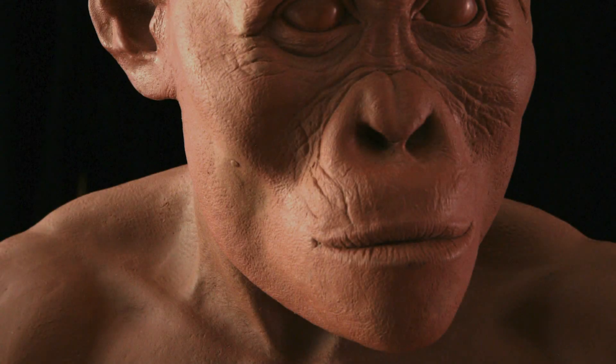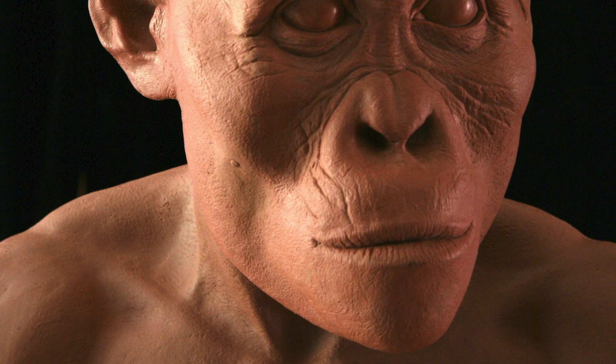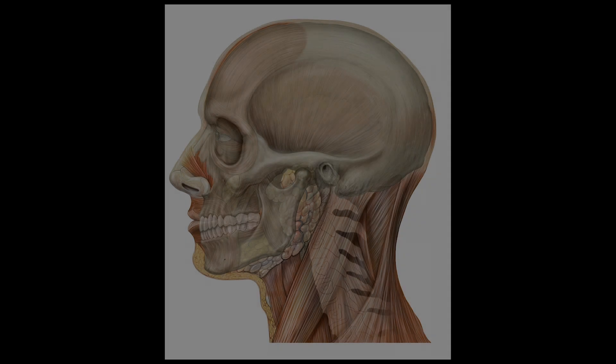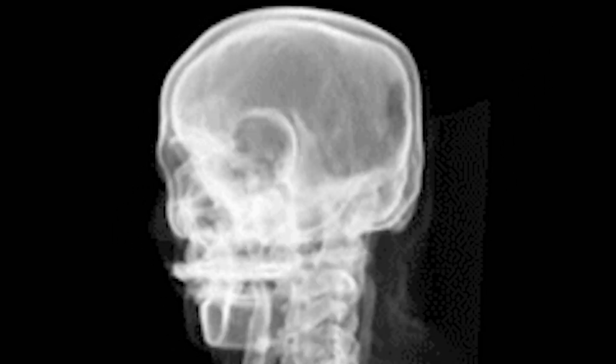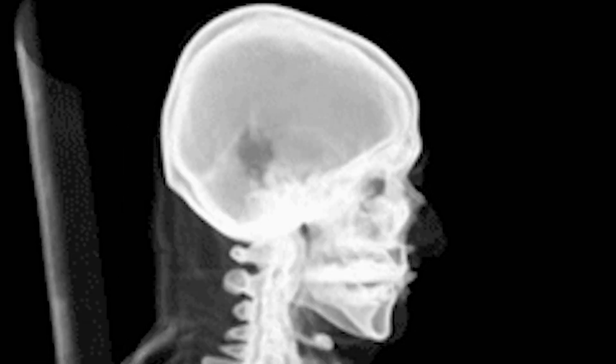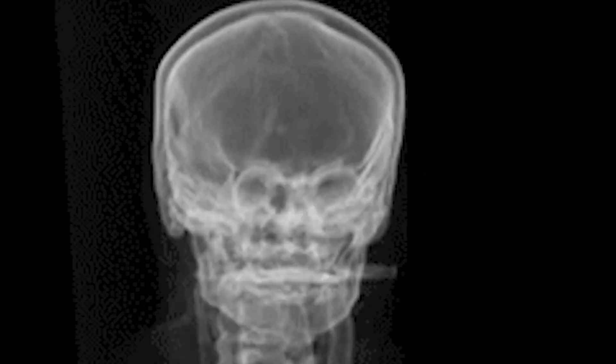The next step in that process is reconstructing the chewing muscles, and those are fairly well marked on the skull. You can tell the position of the temporalis muscle — the muscle you feel moving at the side of your head when you chew. The skull contains a lot of information about the development of that muscle as well.